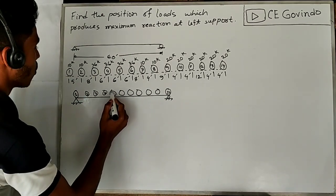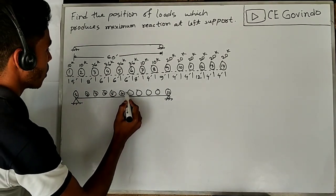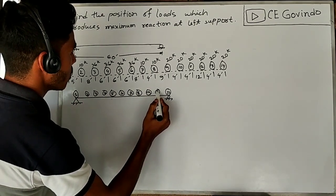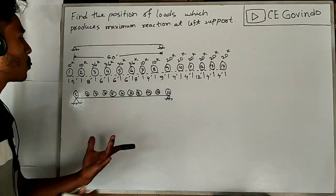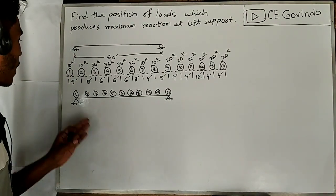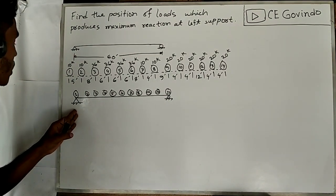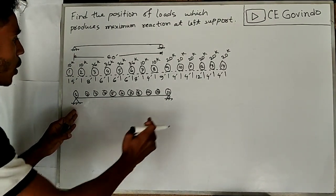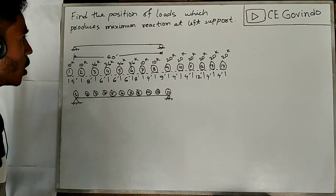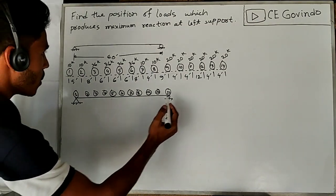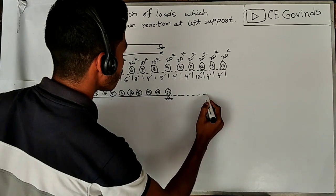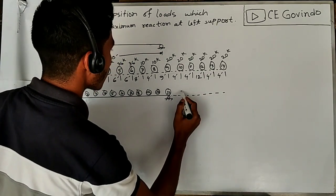Counting the wheel positions: 2, 3, 4, 5, 6, 7, 8, 9, 10. The number of wheels and the total of the wheels are identified for each position.